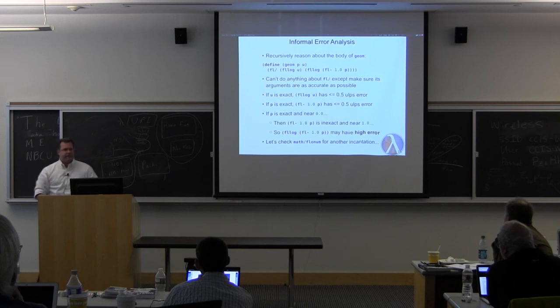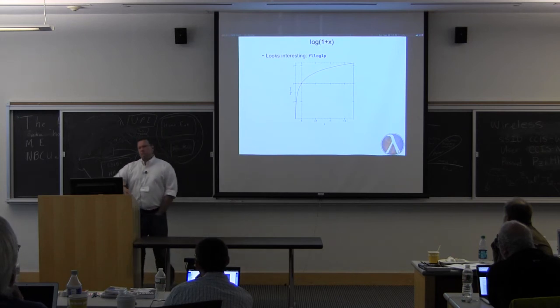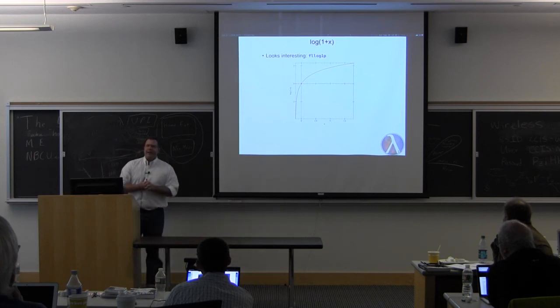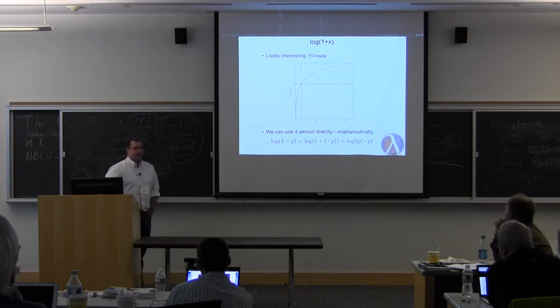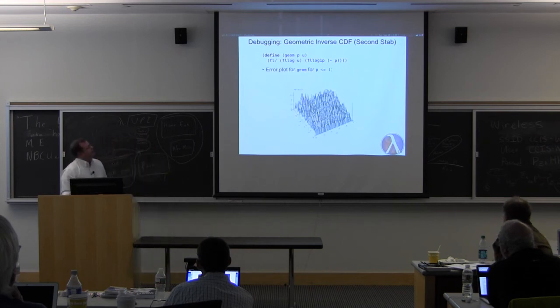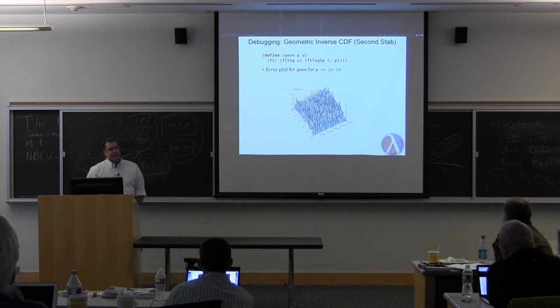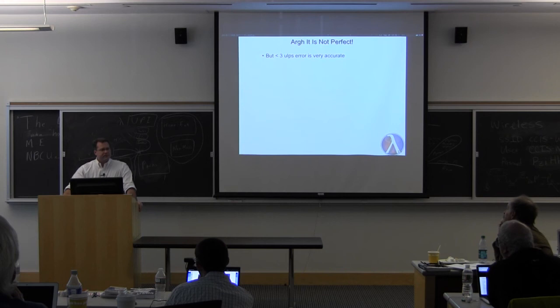So, we'll check math slash flownum for another incantation. In this case, a good solution is using log 1p, which just computes log of 1 plus x. That's it. Which seems like a really stupid function. But, unlike log, it passes through the origin. And, for some interesting reasons, it's a good substitute. Not only that, we can use it directly. Log of 1 minus p is the same as log of 1 plus negative p. So, we'll stick it in there and see how it does. That looks much better. Our error on the left side, where p is close to zero, went lower. And, as we zoom into that side, it continues to be low. And, in fact, as you keep zooming in, it continues to be low all the way near zero. So, we did really well, actually. Three ulps of error is really pretty darn good.